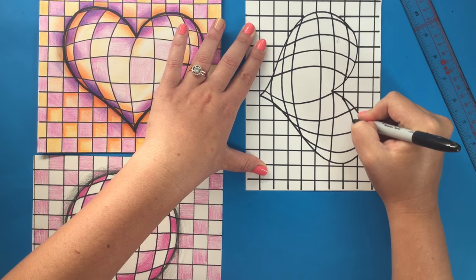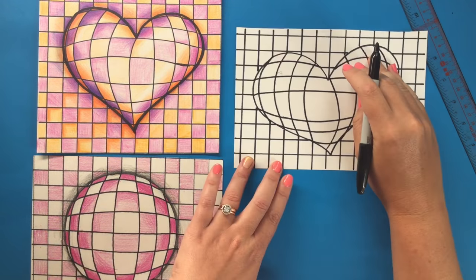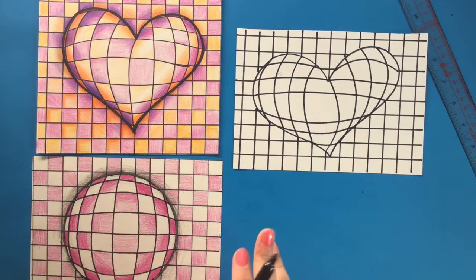And then pick back up on that line and do one final jump on the opposite side. Now that I have done the curved lines of my heart grid, I am now ready to color in my grid.